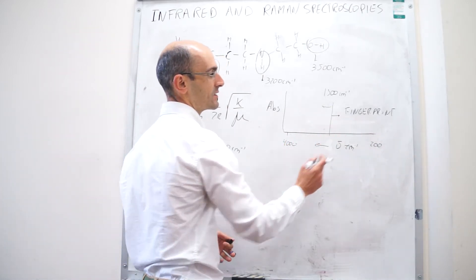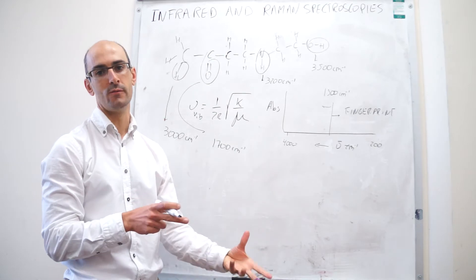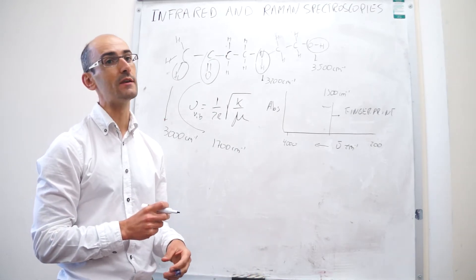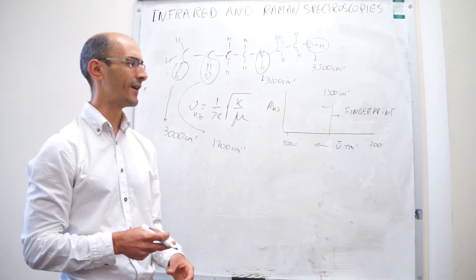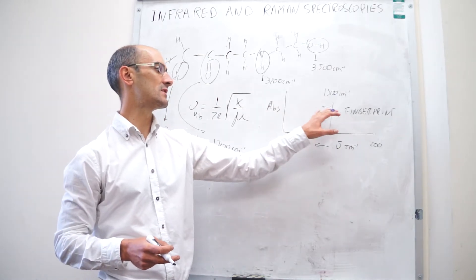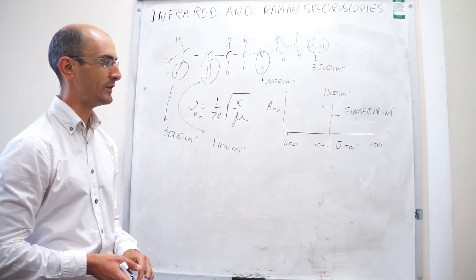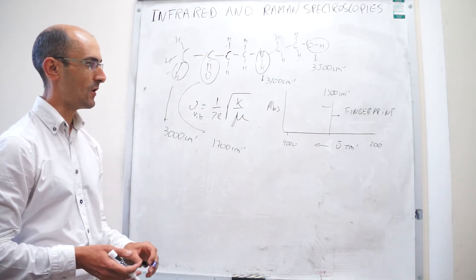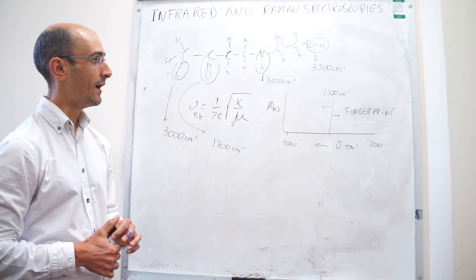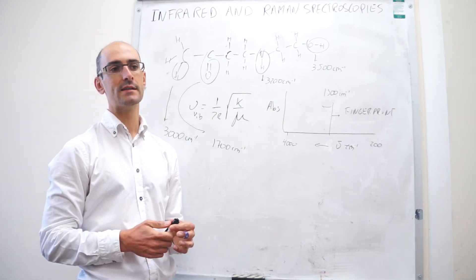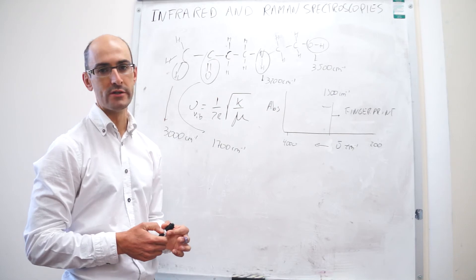In the lower frequency region, it turns out that you will get vibrations that involve the entire molecule. So they might be useful to tell you exactly what molecule you have, but this is not used as much as the identification of functional groups, which happens above 1,500 wavenumbers or so. That is the main application for infrared spectroscopy.